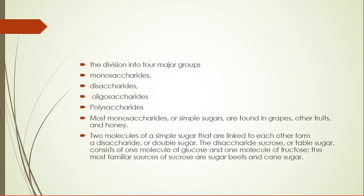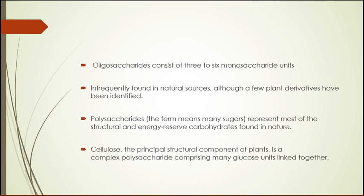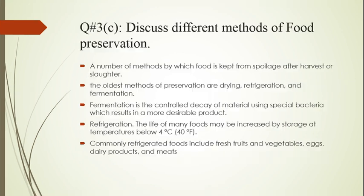The disaccharide sucrose or table sugar consists of one molecule of glucose and one molecule of fructose. The most familiar sources of sucrose are sugar beets and cane sugar. Oligosaccharides consist of three to six monosaccharide units and are infrequently found in natural sources, although a few plant derivatives have been identified. Polysaccharides — meaning 'many sugars' — represent most of the structural and energy reserve carbohydrates found in nature. Cellulose, the principal structural component of plants, is a complex polysaccharide comprising many glucose units linked together.